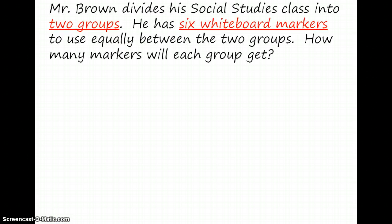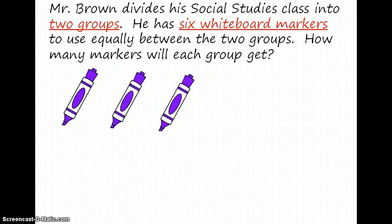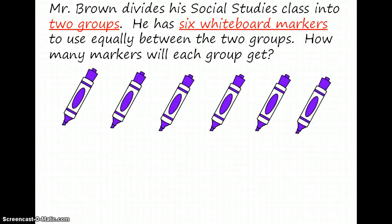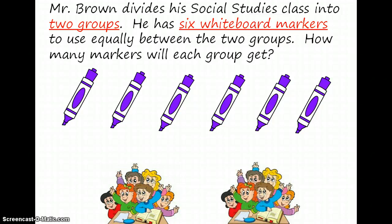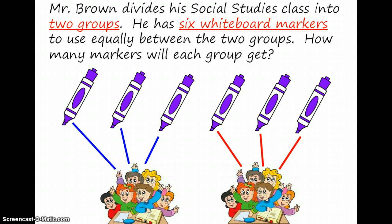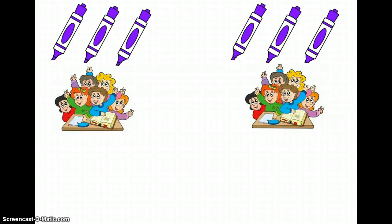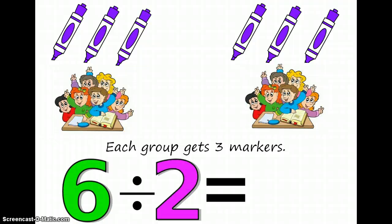So let's solve the problem. We know that there are six whiteboard markers that we want to share among two groups, so each group will get three markers. If we want to represent this with numbers, we have six markers divided by two groups, or six divided by two, which is equal to three — three markers per group.